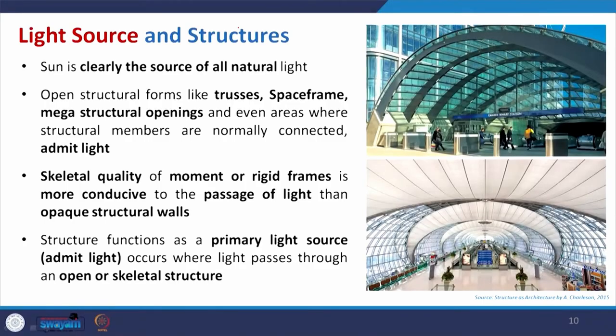Coming to the light source and structure — this is very important. Everything discussed so far is related to daylight or natural light, where the source is basically the sun. In the context of structure as a source of light, it refers to the type of structure that allows direct light penetration. In many cases the structural material used may be of a translucent type, where diffuse light can enter. For example, with a membrane structure, depending on the translucency of the membrane, we can get some diffuse light.